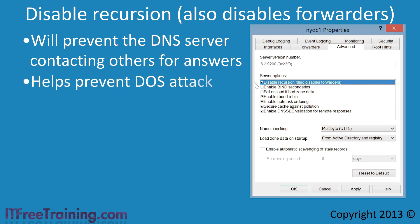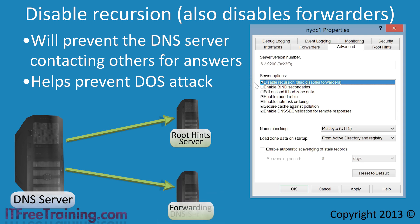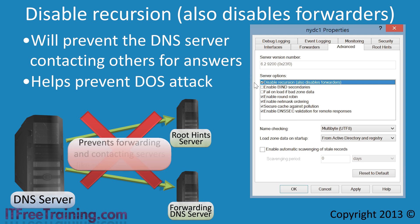Doing this prevents a denial of service attack. This is when an attacker sends a large number of requests at the DNS server at once, and since the DNS server is so busy trying to resolve these illegitimate requests, it prevents it from resolving legitimate requests. If you have a DNS server configured to contact the root hints DNS server or forwarding DNS requests to another DNS server, this will be disabled when you enable this option. If the DNS server cannot answer the query using data on the DNS server, the client will receive a message stating the DNS query could not be resolved.